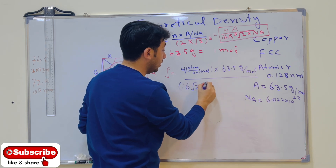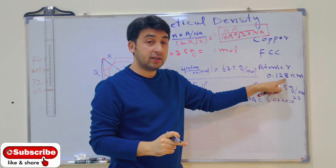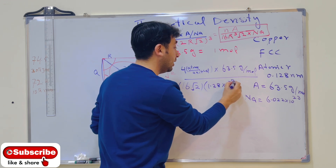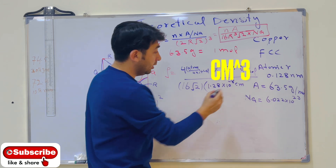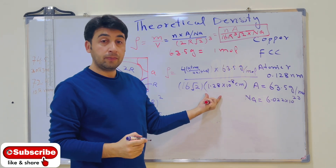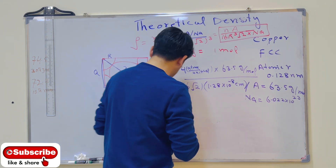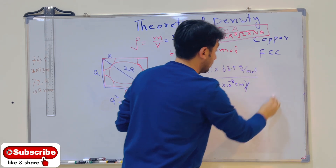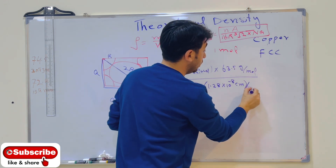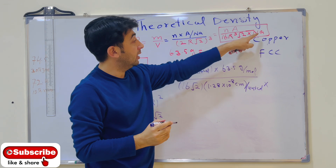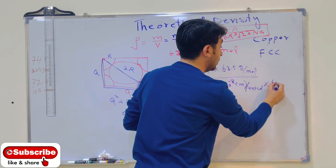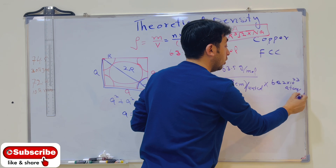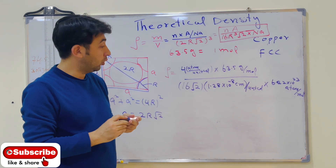So we write 16 × √2 × (1.28 × 10⁻⁸ cm)³ for the volume of one unit cell. This is then multiplied by Avogadro's number, which is 6.022 × 10²³ atoms per mole. Now we just do the calculation using a calculator.